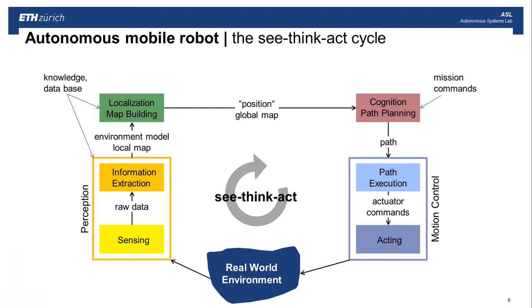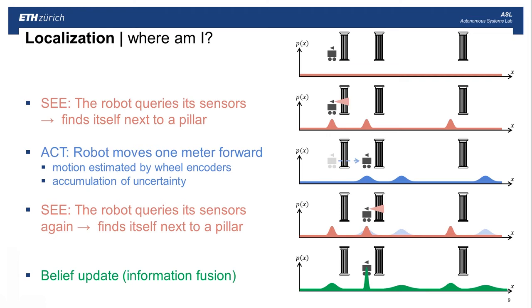The next step — once you have perceived the environment and extracted features or different elements — is to localize the robot in its environment. For doing this, you combine information from the sensor with information from the map and the knowledge base. You try to compare what you have perceived of the environment with what is stored in the map in order to determine the robot's position relative to its local environment. Let us see on this slide how this is typically implemented.